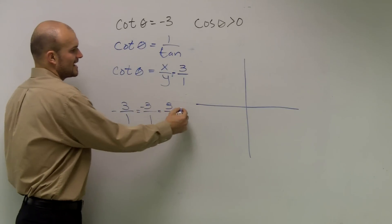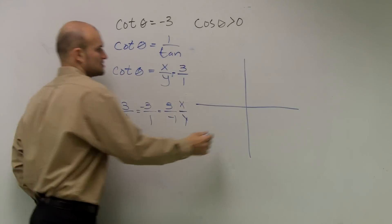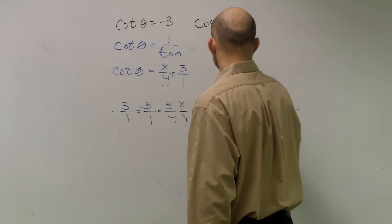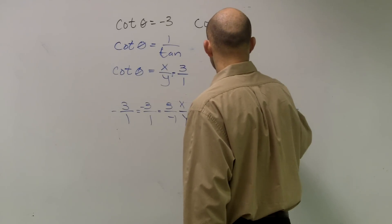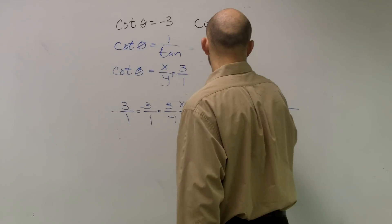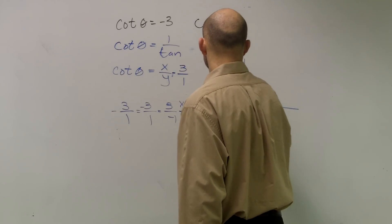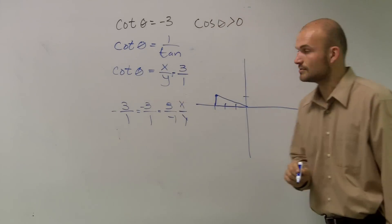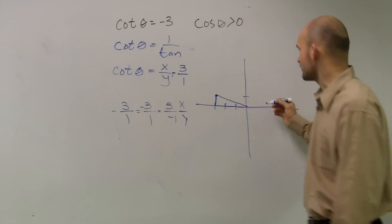Well, negative 3, remember it's x over y. So I could do negative 3, 1, 2, 3. So I could use this triangle, or it could be 3 over negative 1.